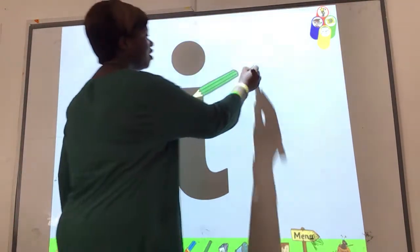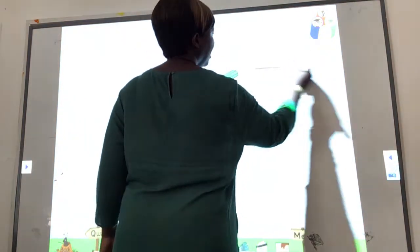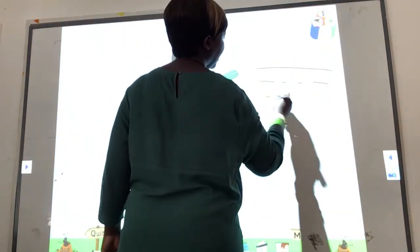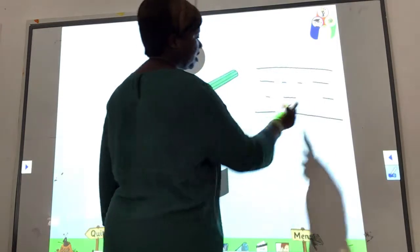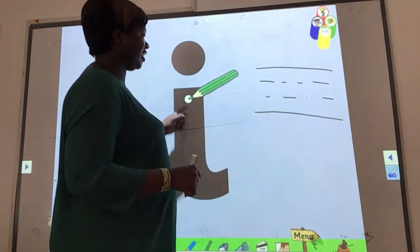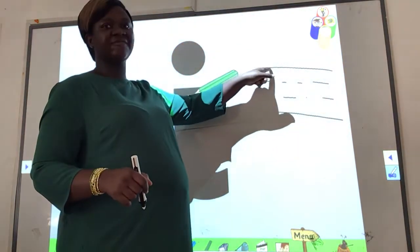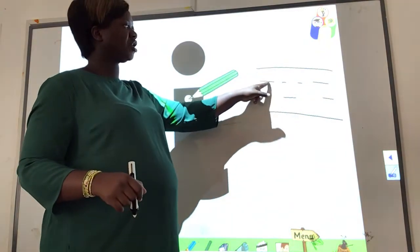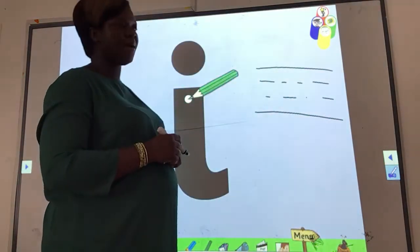Now, I've told you before in our books, we have three lines. The top line, the middle line and the bottom line. So we are going to find out if E is a tall letter that will start from the top line or it's a short letter and we are going to write only in the middle line.